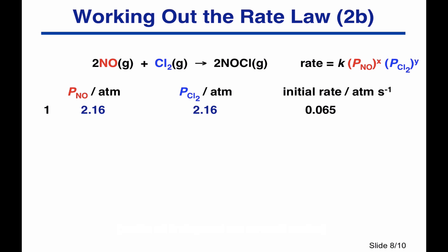Now let's look at a second example: the reaction between gaseous NO and Cl₂. Because this is in the gas phase, we use partial pressures instead of concentrations — in atmospheres instead of mol/L. We still write the rate law in the same form: rate equals K times the partial pressures of the two reactants raised to unknown powers X and Y. We do experiments varying those partial pressures and measure the reaction rate.